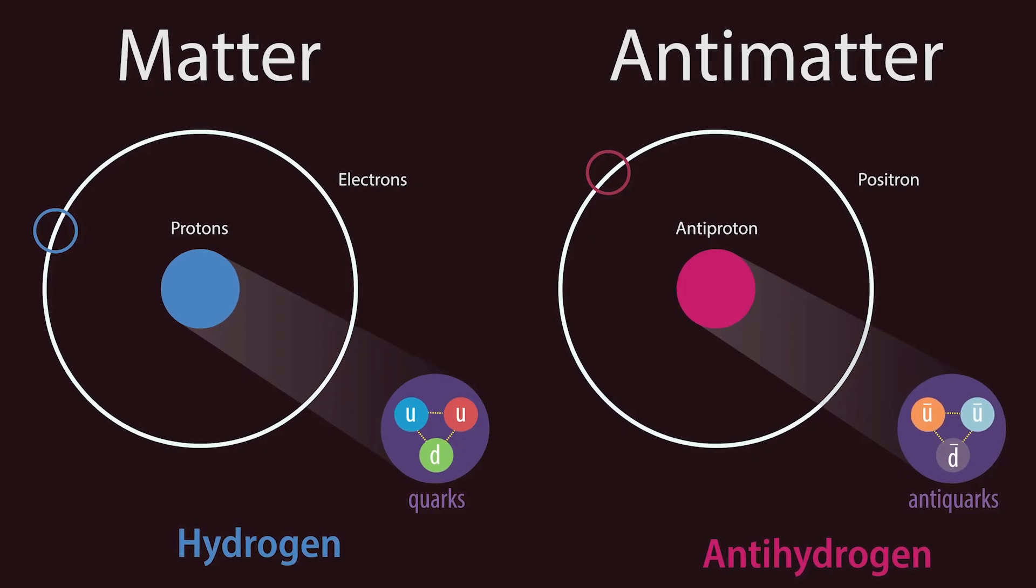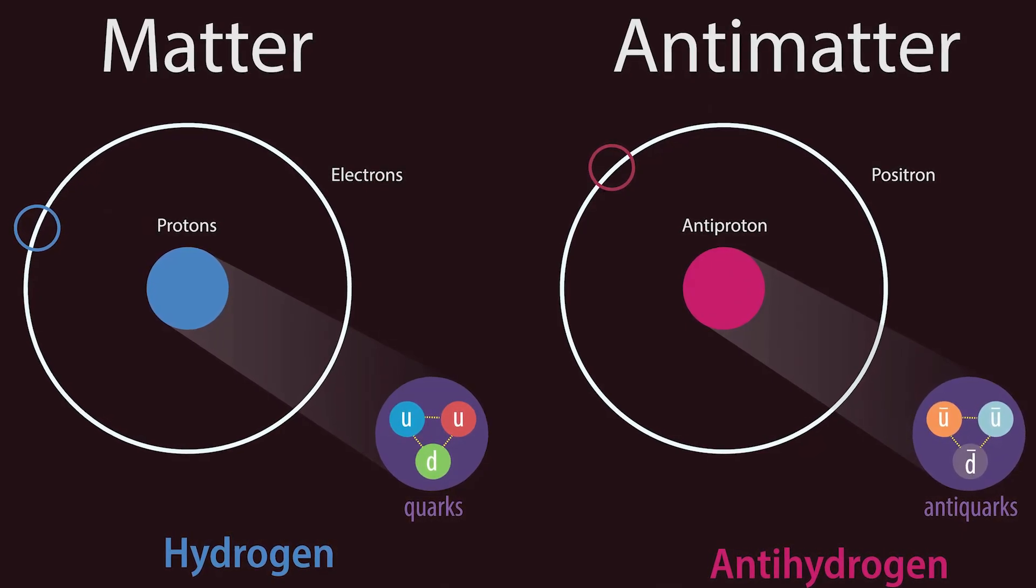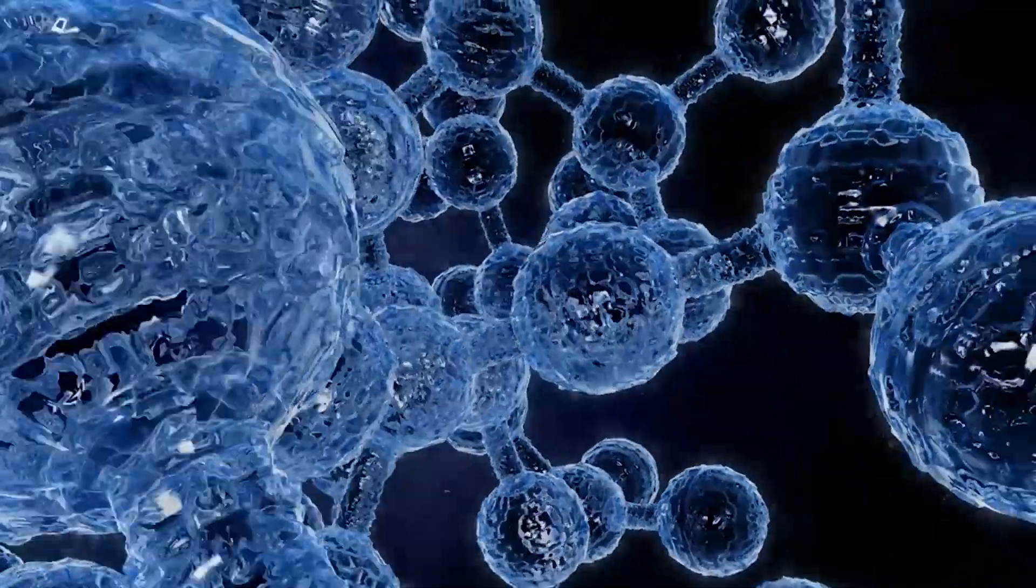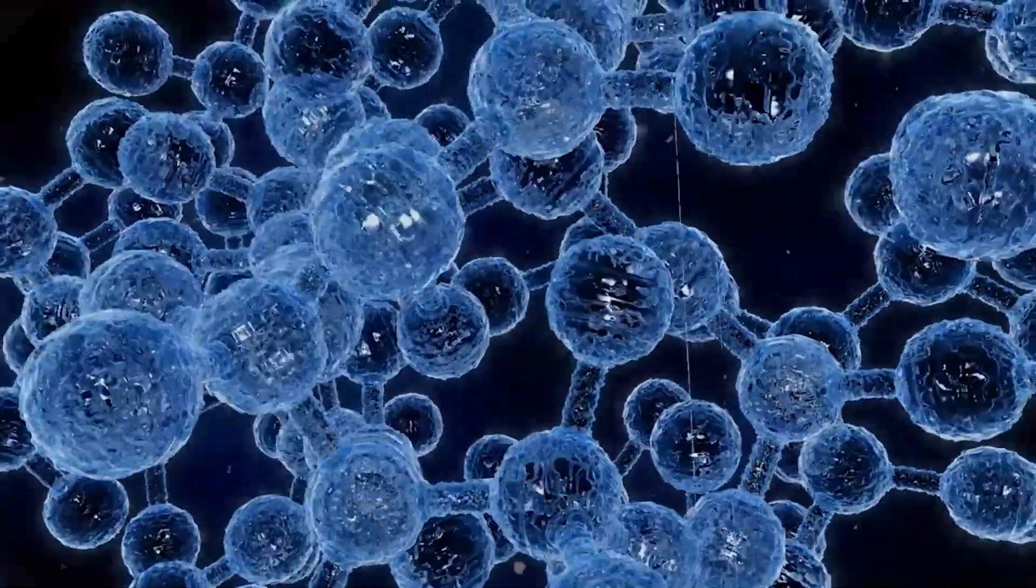Matter takes up space and has mass. By adding the concept of antimatter as distinct from matter, physicists narrowed the definition of matter to apply to only certain kinds of particles, including all those found in everyday experience.